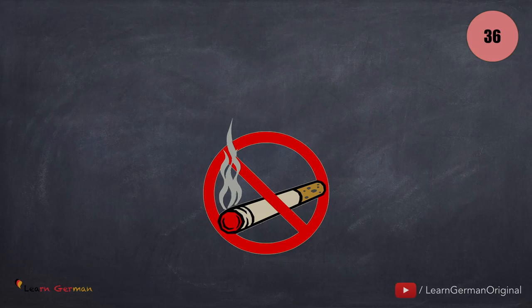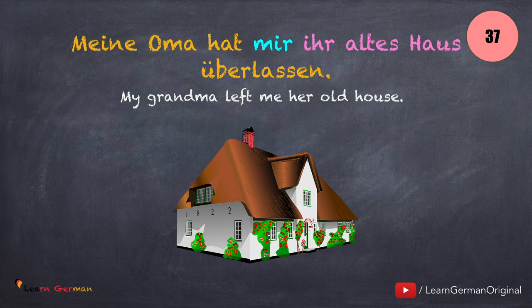Moving on to the next one: Meine Oma hat mir ihr altes Haus überlassen. Jemandem etwas überlassen.